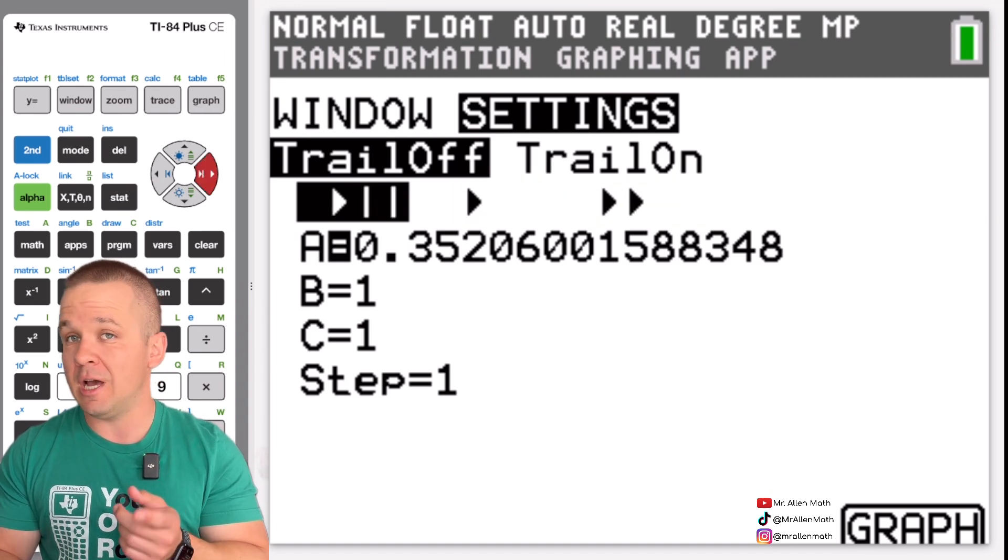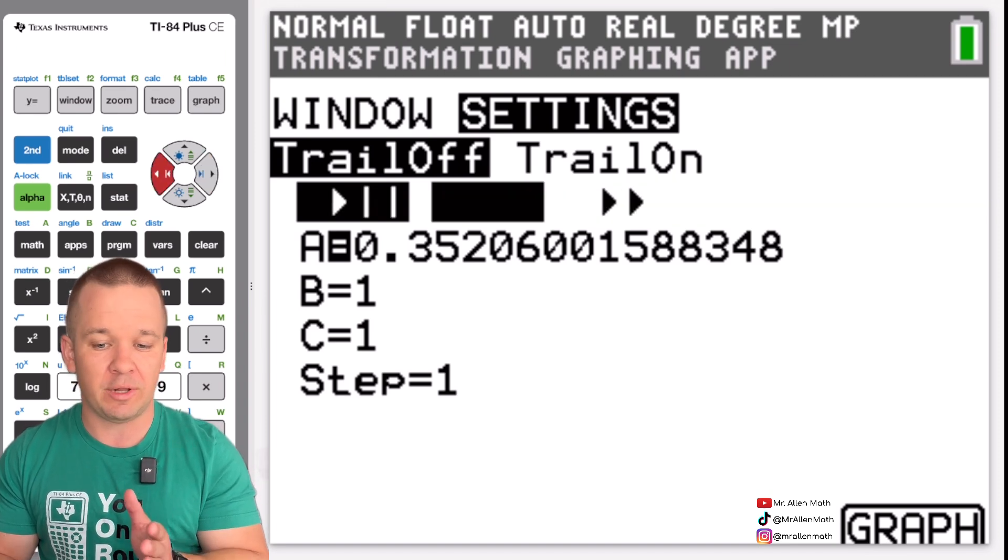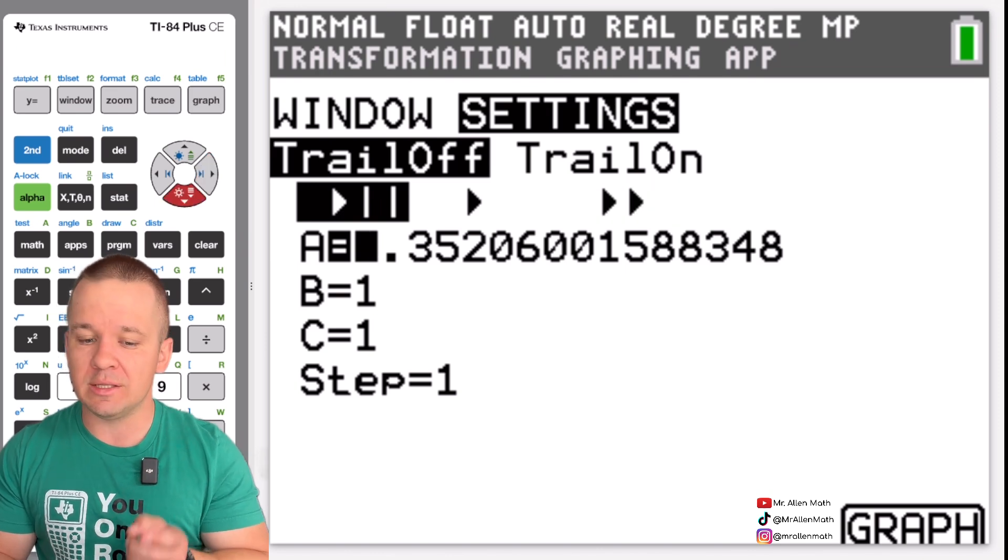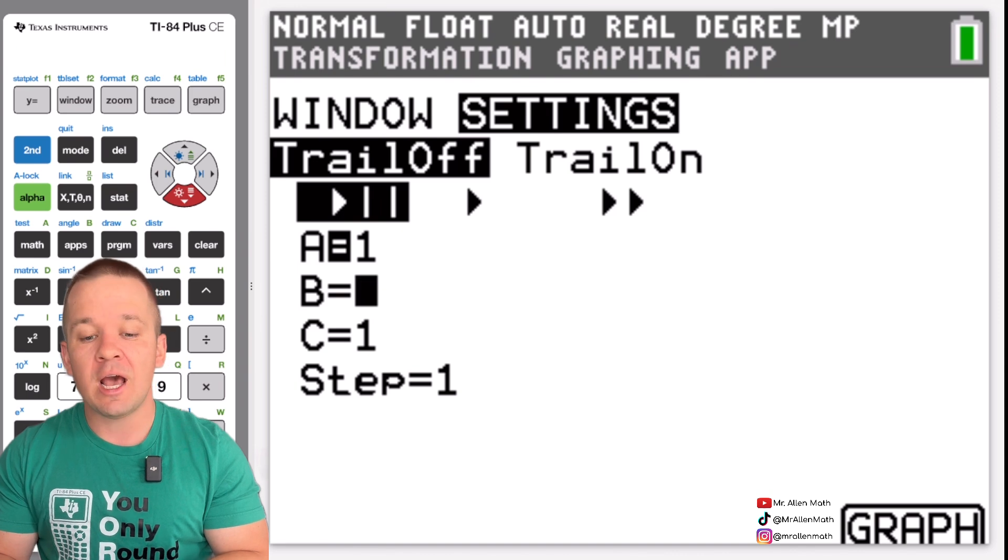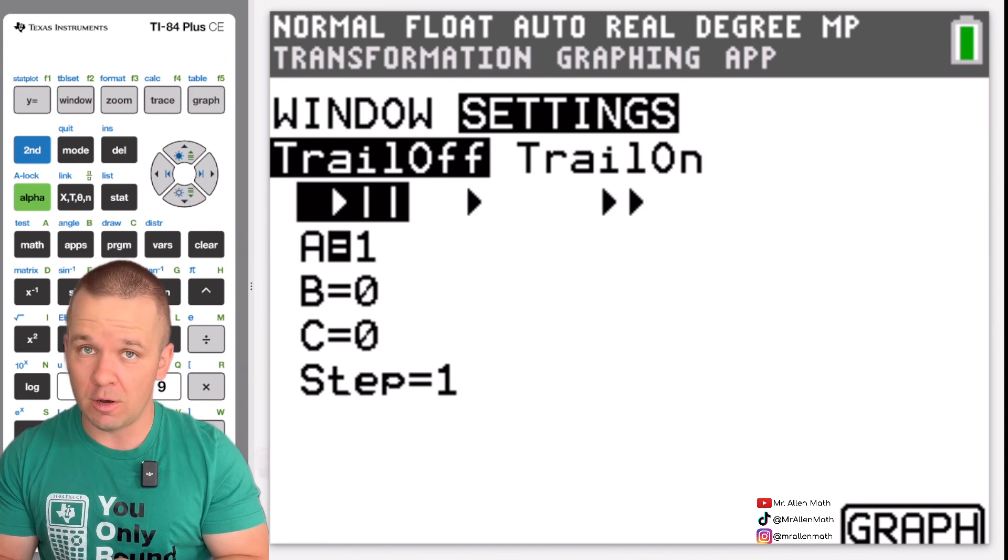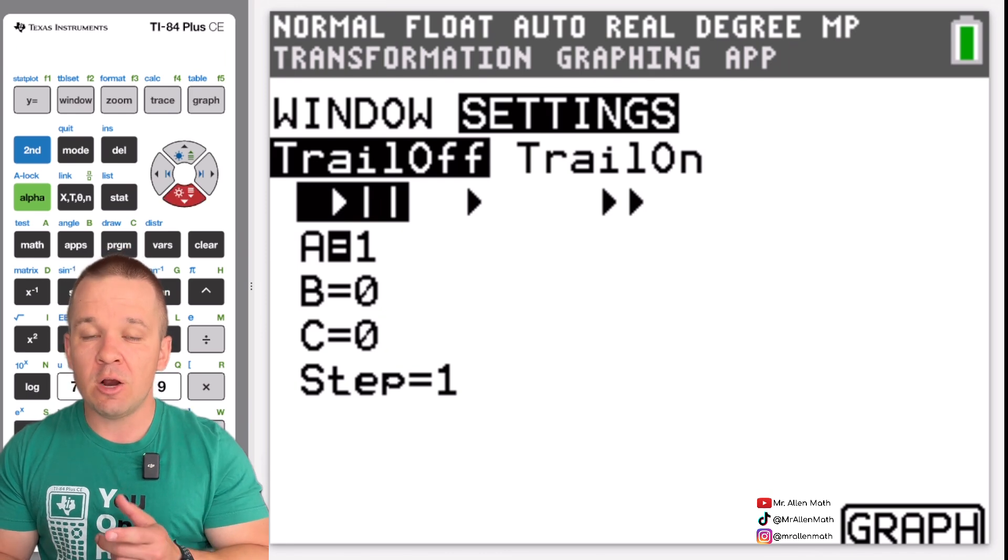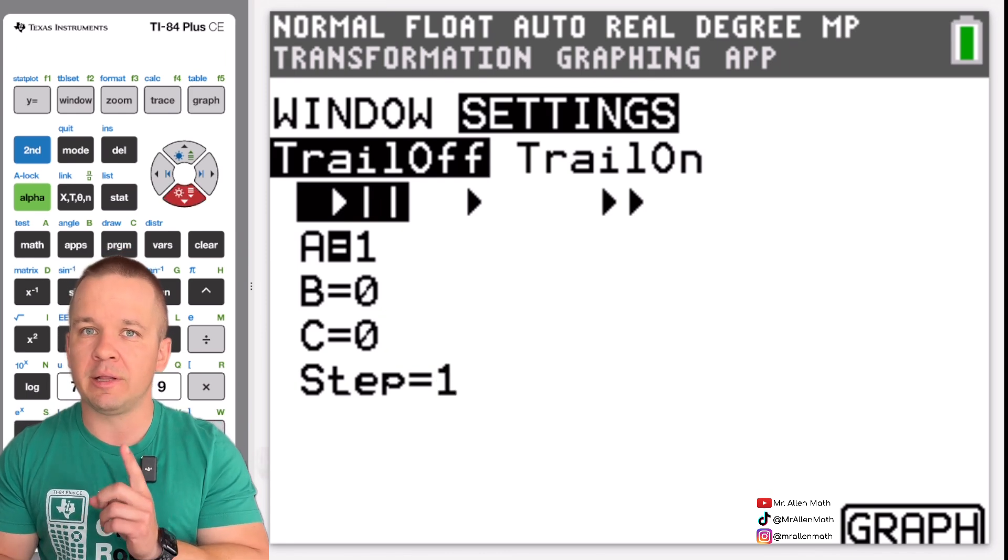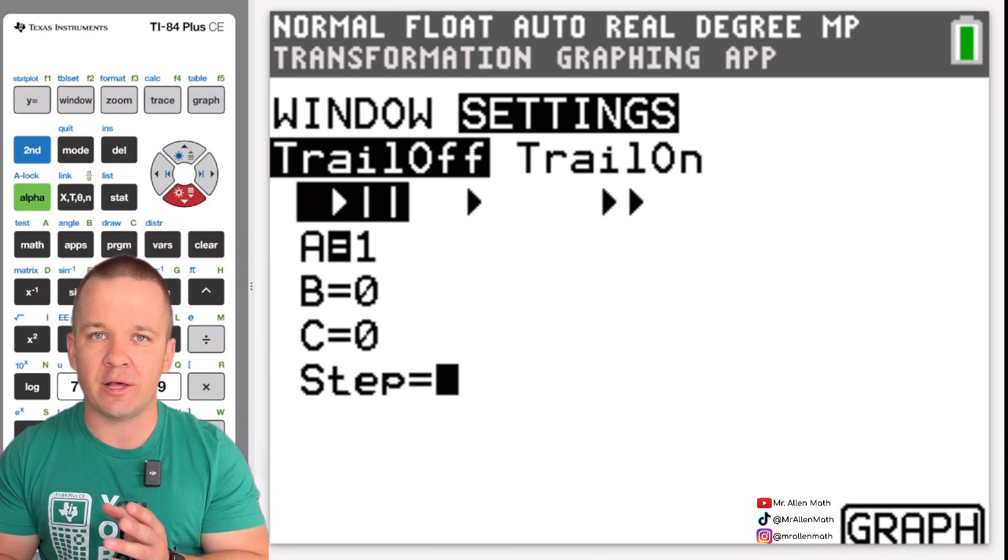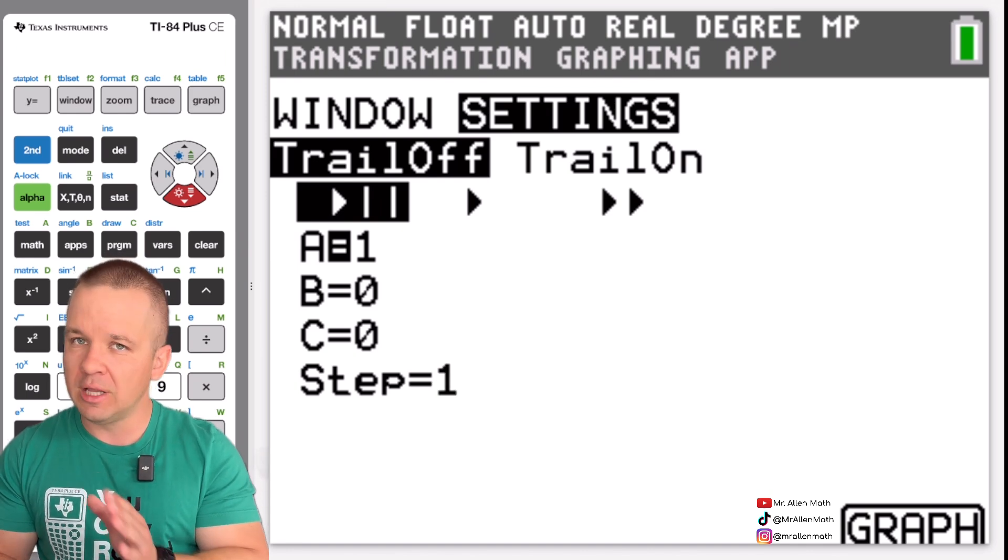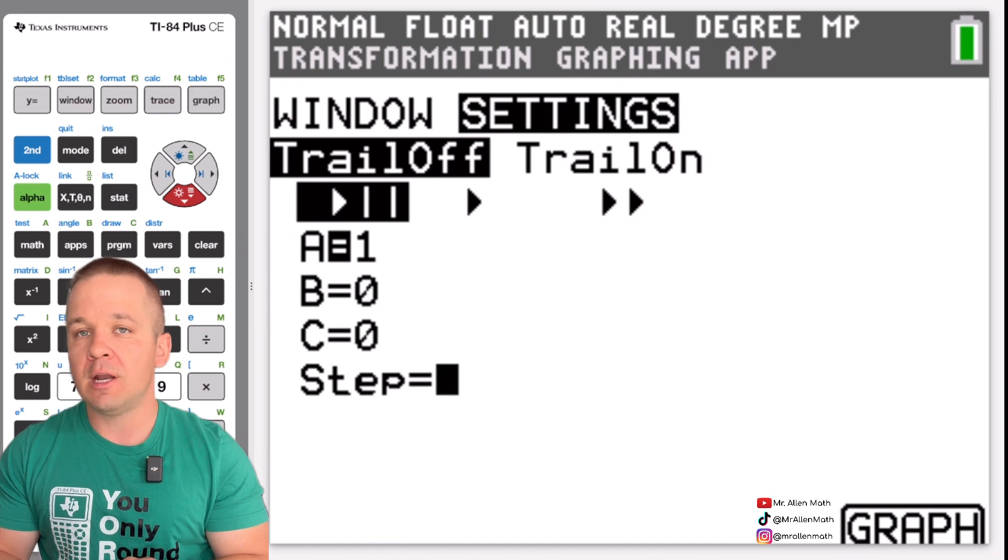So from here you can change the options of that play pause and just play and then that like fast forward type of button. But I'm going to go down to the A B and C. I'm going to change A to one and I'll change the other ones to zeros. So that way we start at the origin with our vertex. Down here we have the step. So that'll come up a little bit later but that'll be how much we're going to change those values, the A B and C values when we're in that graph. So I'm going to leave it at one for right now. Now I'm going to hit graph.